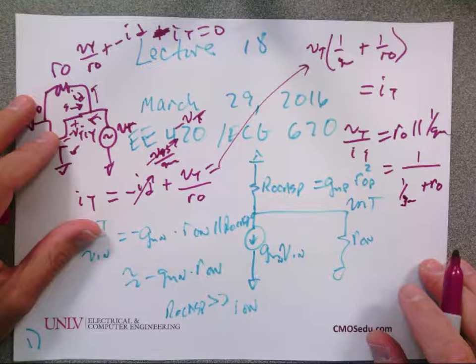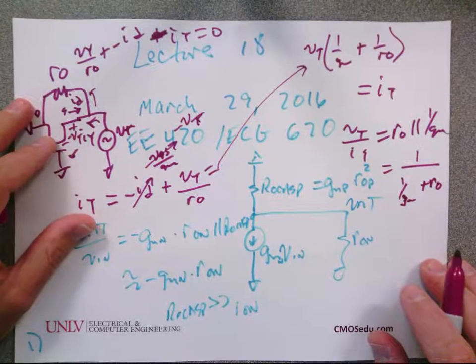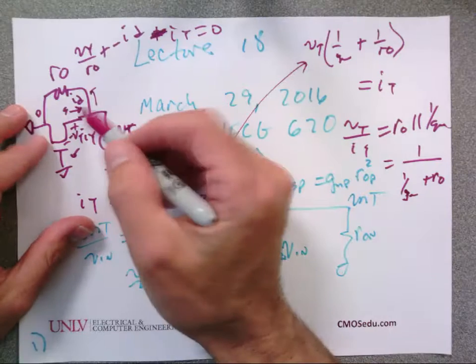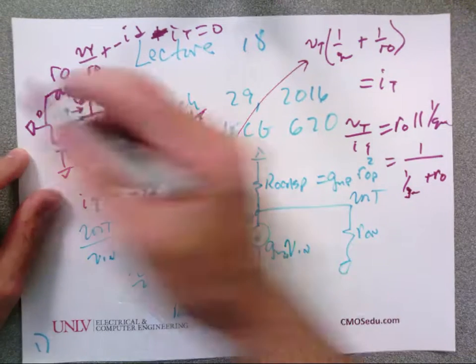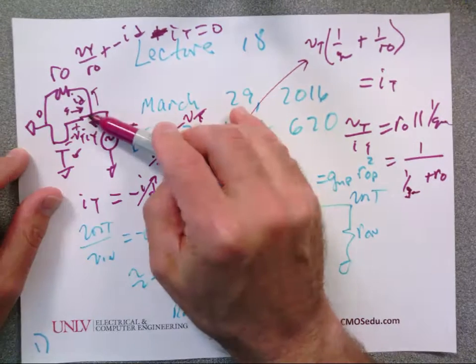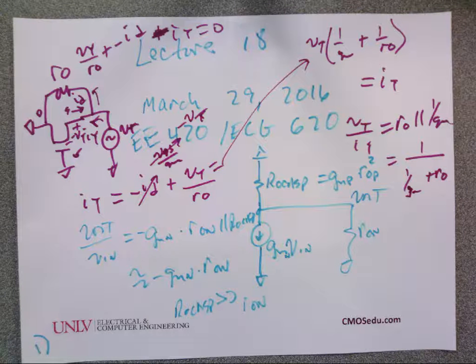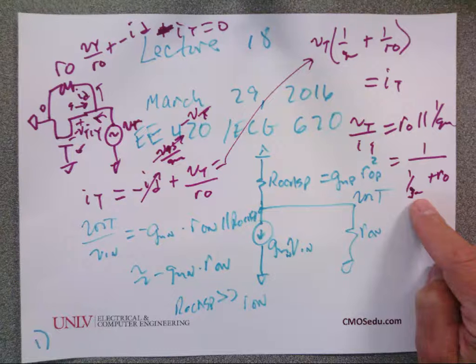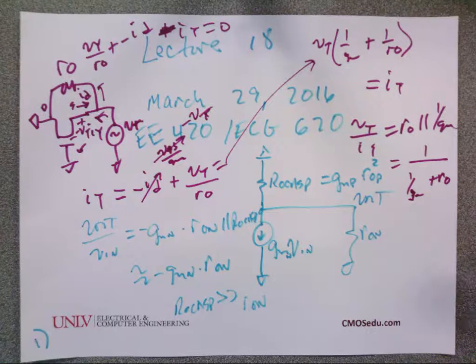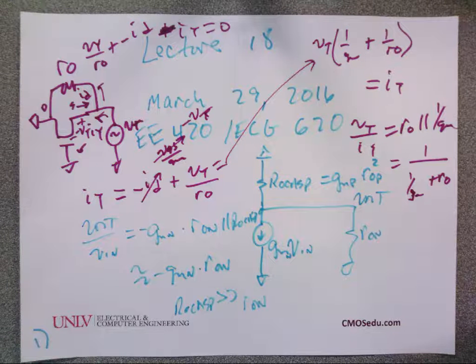You can write this as R_out in parallel with one over G_M. For 99% of what we do, it's just one over G_M. If R_out is not much bigger than one over G_M, then you don't have a large G_M R_out or open-circuit gain, and the transistor won't amplify.